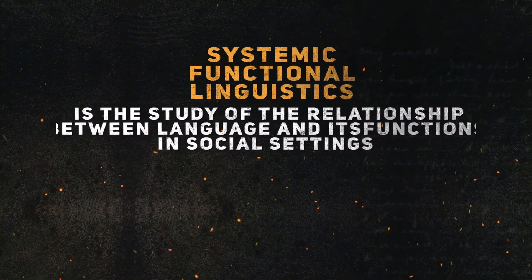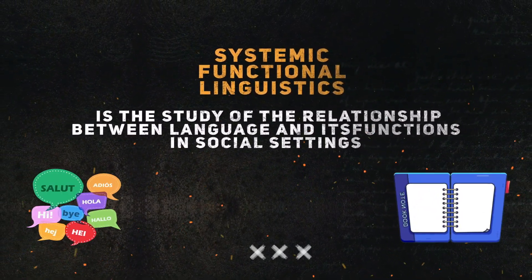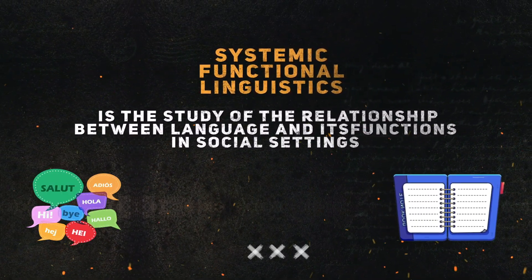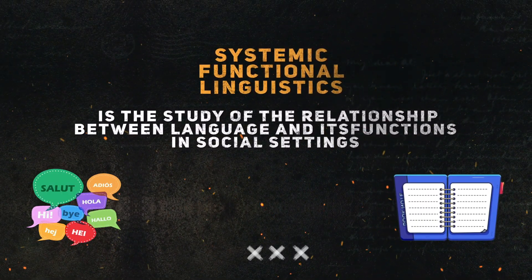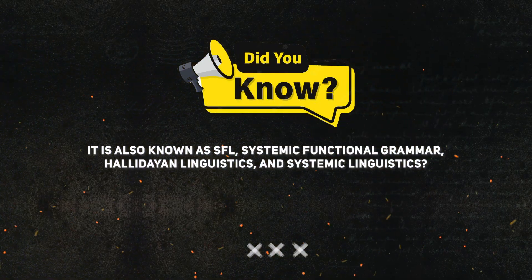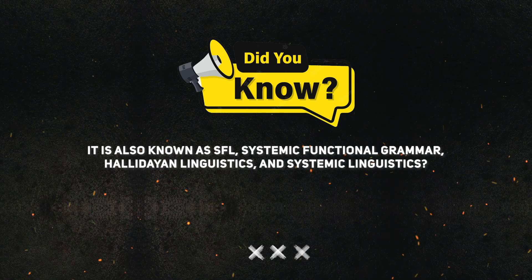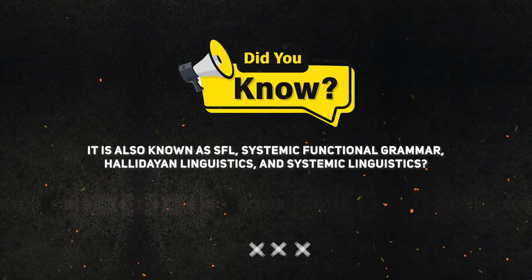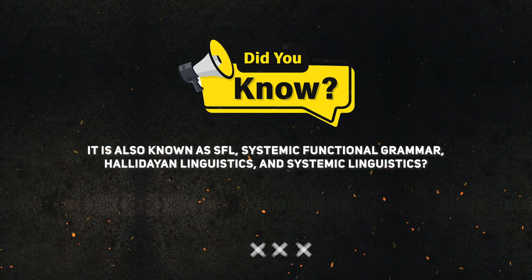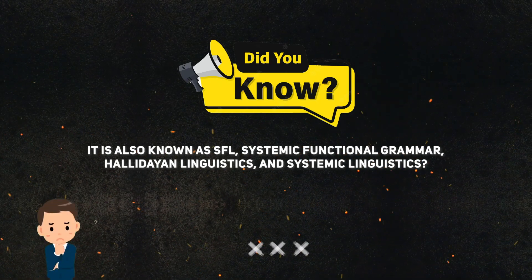Systemic Functional Linguistics is the study of the relationship between language and its functions in social settings. It is also known as SFL, Systemic Functional Grammar, Hallidayan Linguistics, and Systemic Linguistics.